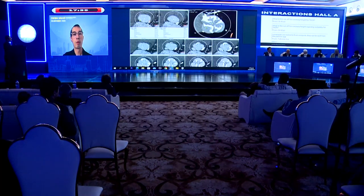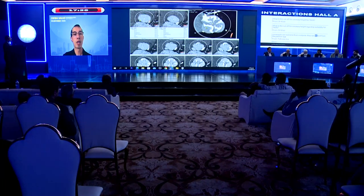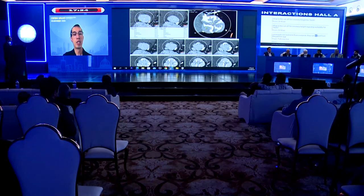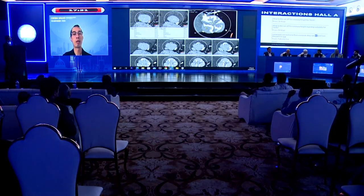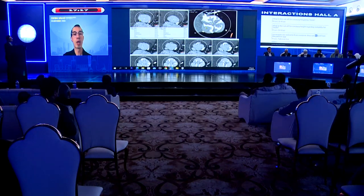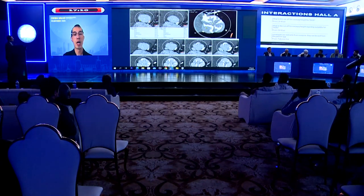An example CT workup includes the hockey puck view to assess whether it's a tricuspid or bicuspid valve, annulus and LVOT anatomy, and routine 1mm cuts to examine calcium morphology and location. If calcium is located at the base of the annulus, it carries higher risk of potential rupture if the valve is significantly oversized relative to native anatomy.